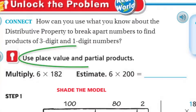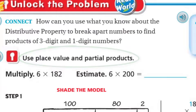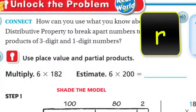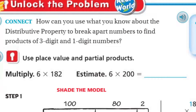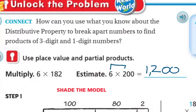Now it says to use place value and partial products. We're going to multiply 6 times 182. First, it tells us to estimate. When you estimate, it gives you kind of an idea of what you think the answer would be. Here it's really nice because we have 6 times 2, which is 12. Two powers of 10 gives us 1,200. So our estimate is 1,200. Now let's see what we need to do with our model.